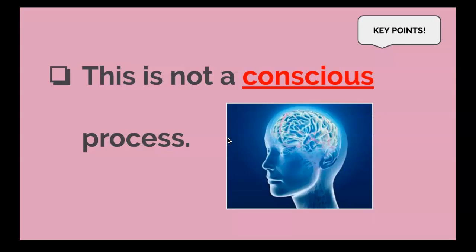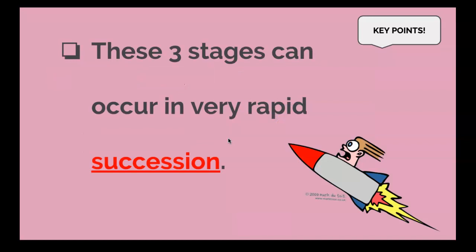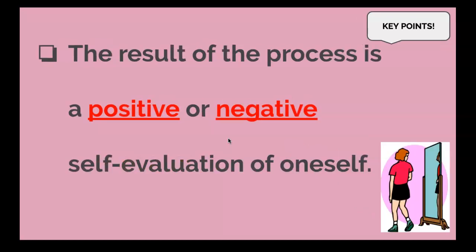A few key points: this is not a conscious process. As you're using this process to shape your self-image, you're not aware that you're actually doing it or that it's having that effect. Those three steps occur in very rapid succession — from imagining how you appear, to imagining reactions, to shaping your self-image — it can all occur in a matter of seconds. The biggest result is that you might have a more positive or more negative self-evaluation of yourself.